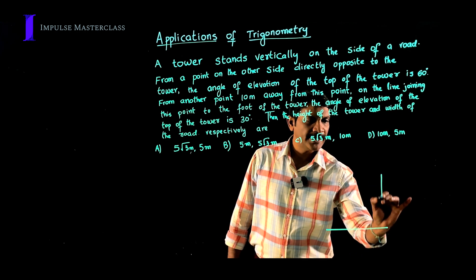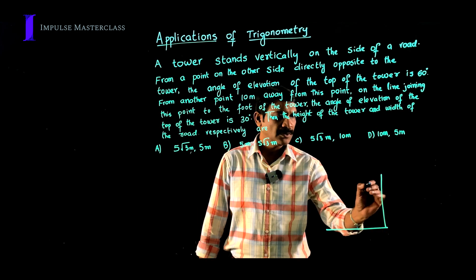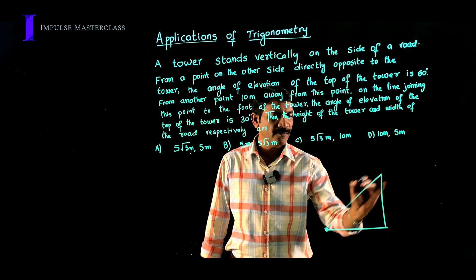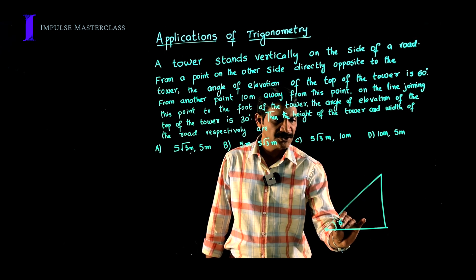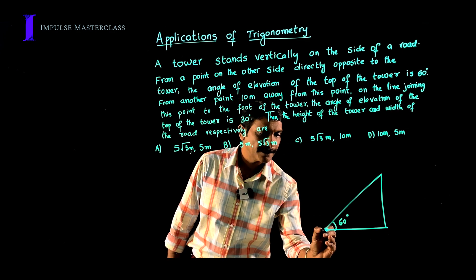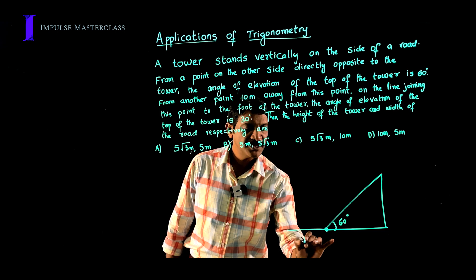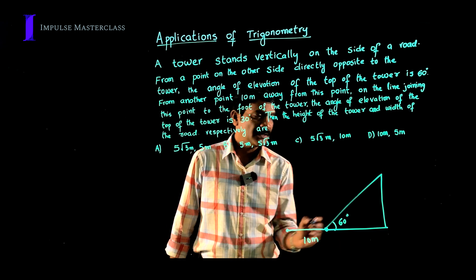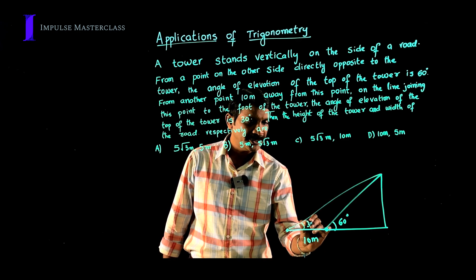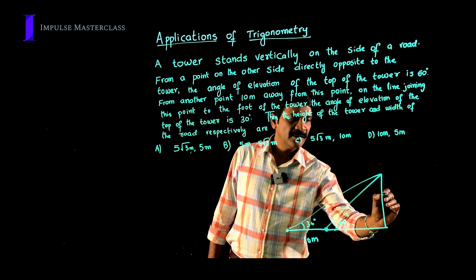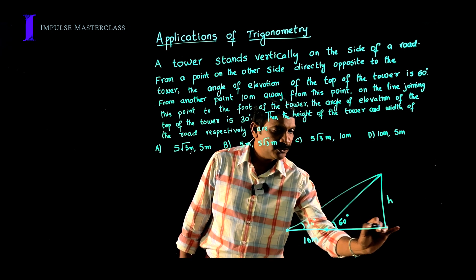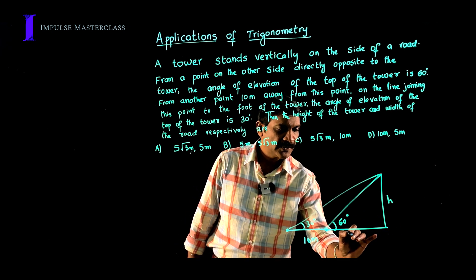We have a road with a tower on one side. At a point on the opposite side of the road, the angle of elevation of the top of the tower is observed to be 60 degrees. From another point 10 meters away from this point, the angle of elevation is observed to be 30 degrees. We need to find the height of the tower — let it be h — and also the width of the road — let this be d.